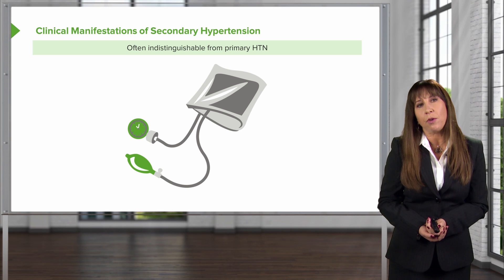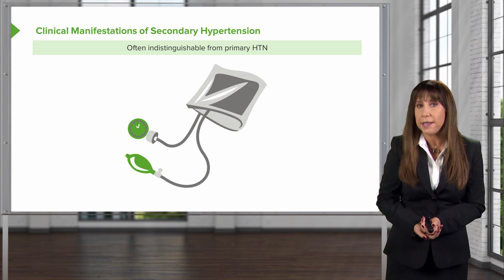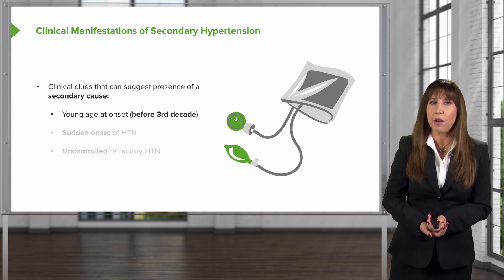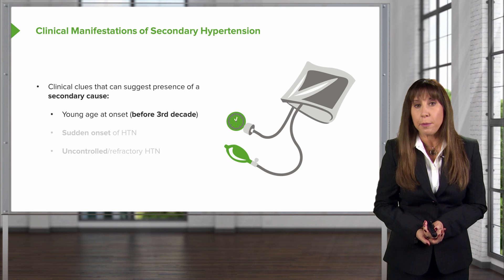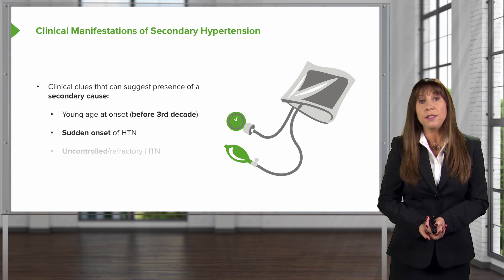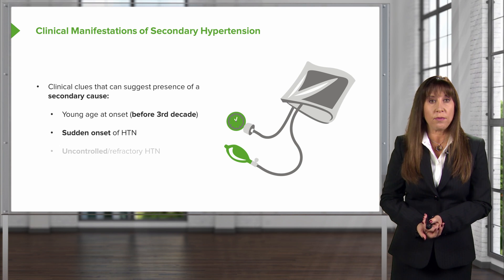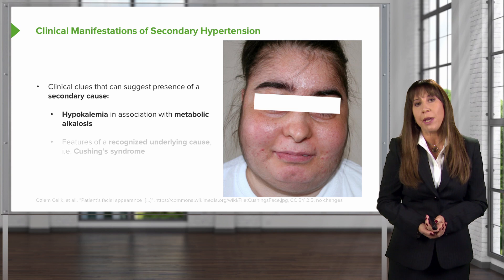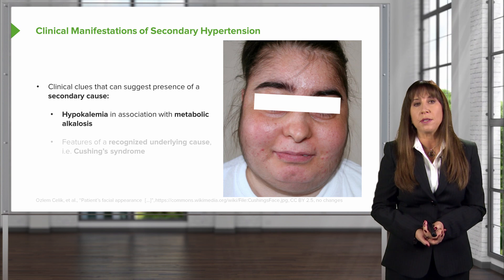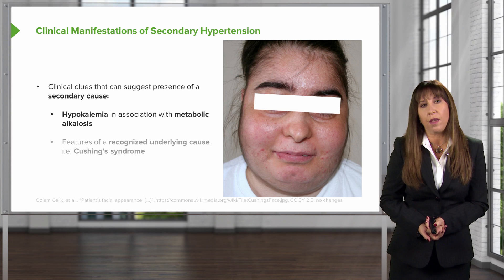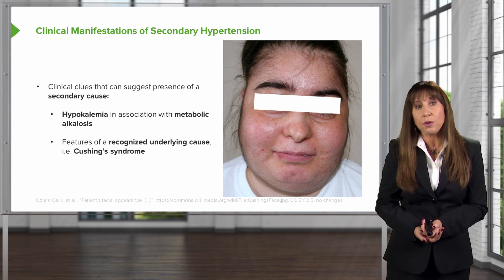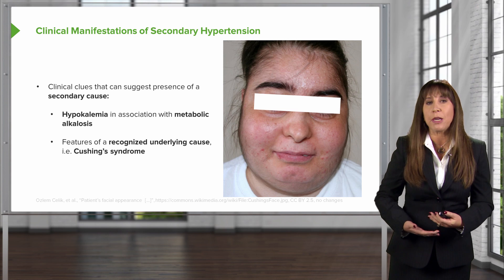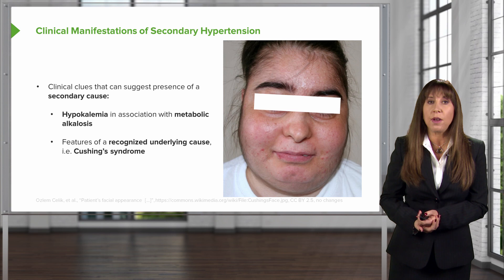When you have that patient sitting in front of you, it's sometimes very difficult to distinguish between primary and secondary hypertension. But there are a few clinical clues that can suggest a secondary cause. These include young age of onset, typically before the third decade, a sudden onset of hypertension in someone who was previously normotensive, or uncontrolled and refractory hypertension. We can also see hypokalemia in association with metabolic alkalosis, often without diuretic use. A patient may also have features of a recognized underlying cause — for example, new onset hyperglycemia with weight gain, truncal obesity, and moon facies, very suggestive of Cushing syndrome.